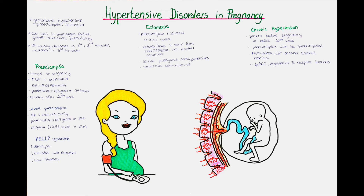It is also possible that a hydatidiform mole or choriocarcinoma are the reason for pre-eclampsia. This should be suspected when pre-eclampsia develops in the early second trimester, so week 14 to 20, as usually pre-eclampsia develops after the 20th week of gestation. What is known so far is that placental ischemia, so too little oxygen delivered to the placenta, plays a key role. It is thought that this can be due to the failure of cytotrophoblasts, which leads to an invasion of the uterine spiral arteries and a lower resistance in the uteroplacental circulation.